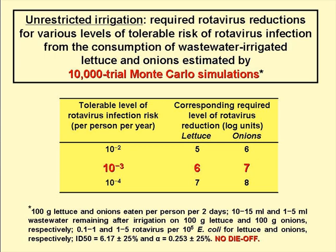This slide gives results of Monte Carlo risk simulations done the reverse way. We fix the rotavirus infection risk at 10 to the minus 2, 10 to the minus 3, and 10 to the minus 4 per person per year, and for each of these values the computer program determined the required rotavirus reduction in log units. No die-off between last irrigation and consumption was considered in this case. The table shows that for the design rotavirus infection risk of 10 to the minus 3 per person per year, we need to achieve a 6 log unit reduction for lettuce and 7 for onions — these are the total reductions from raw wastewater to consumption.